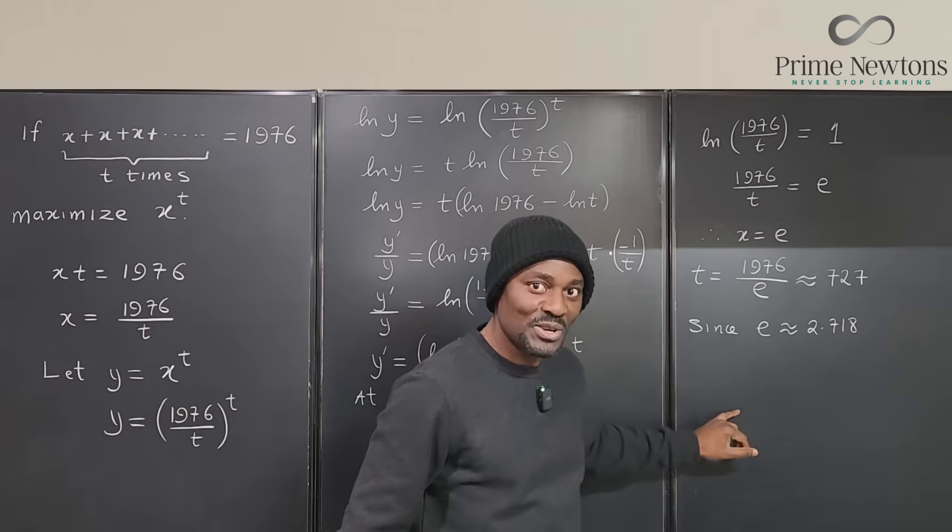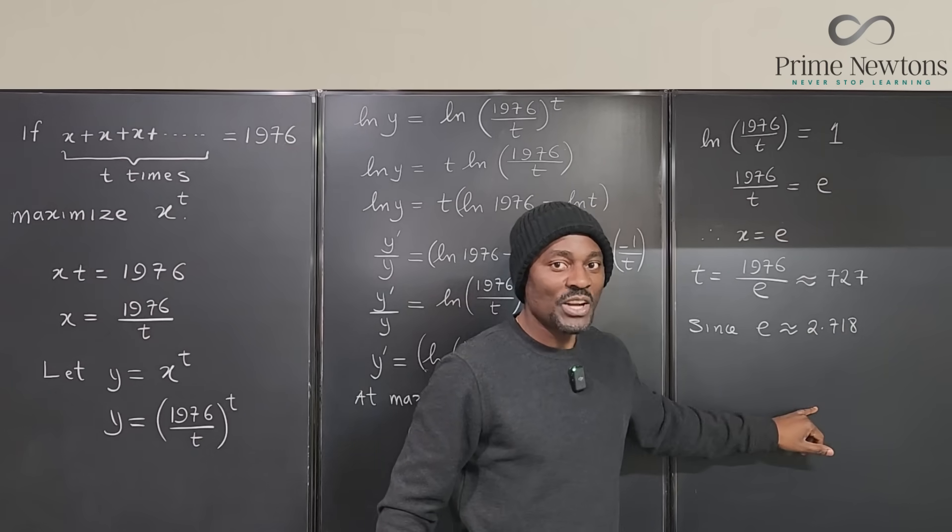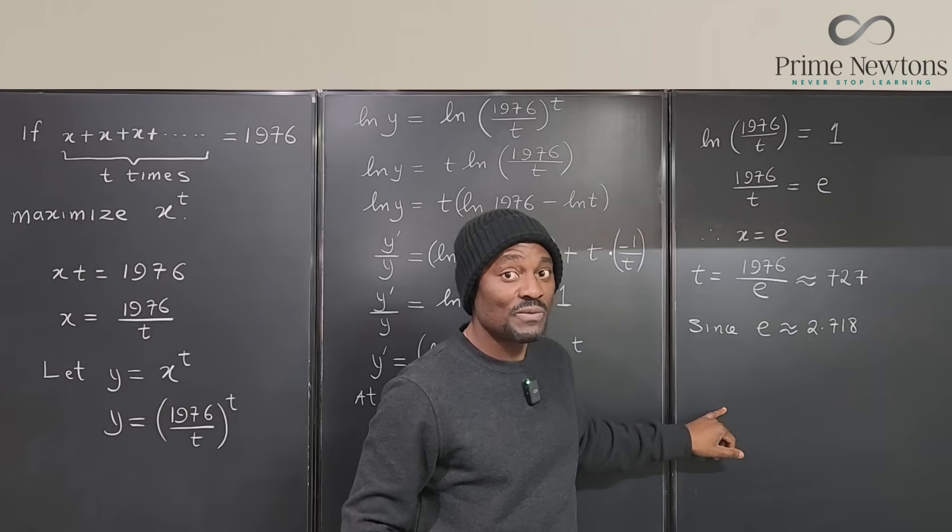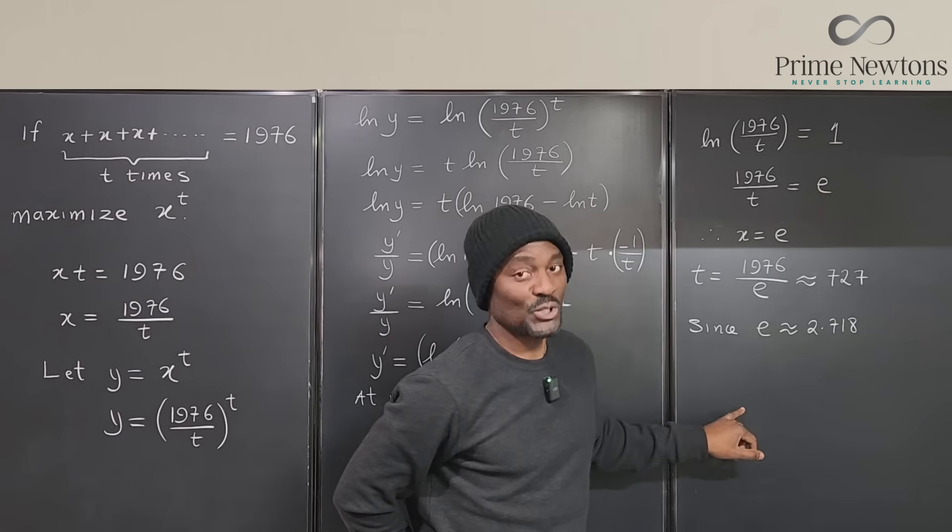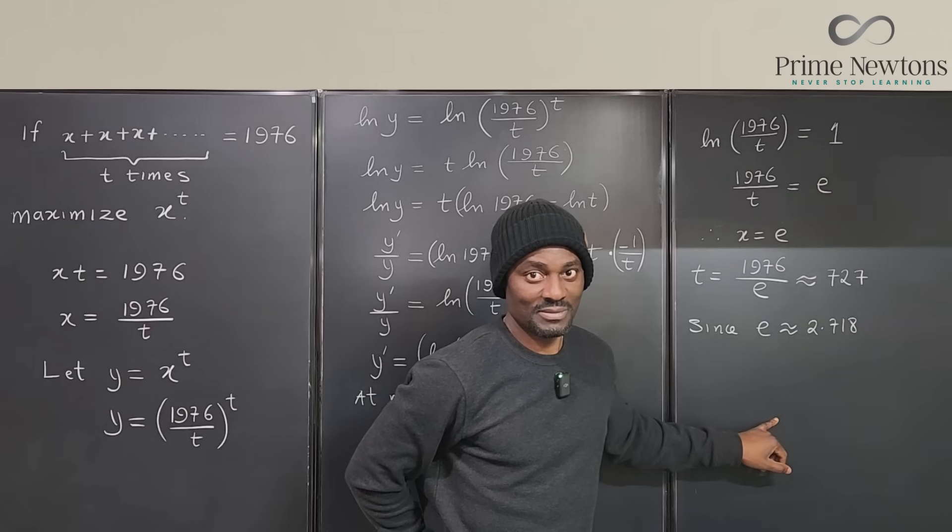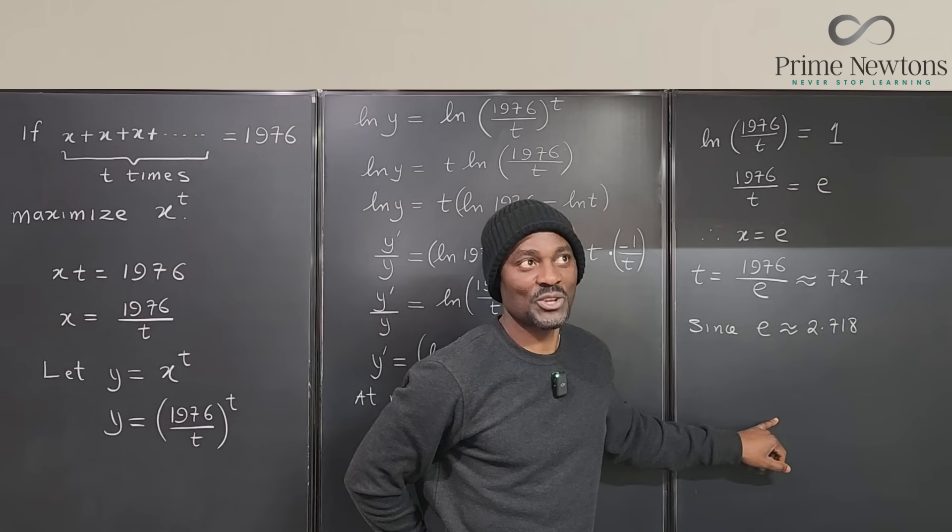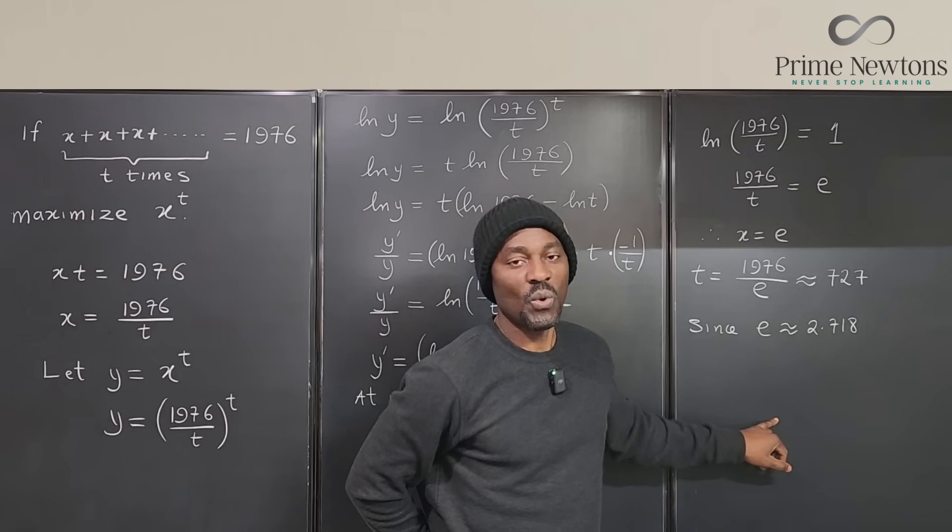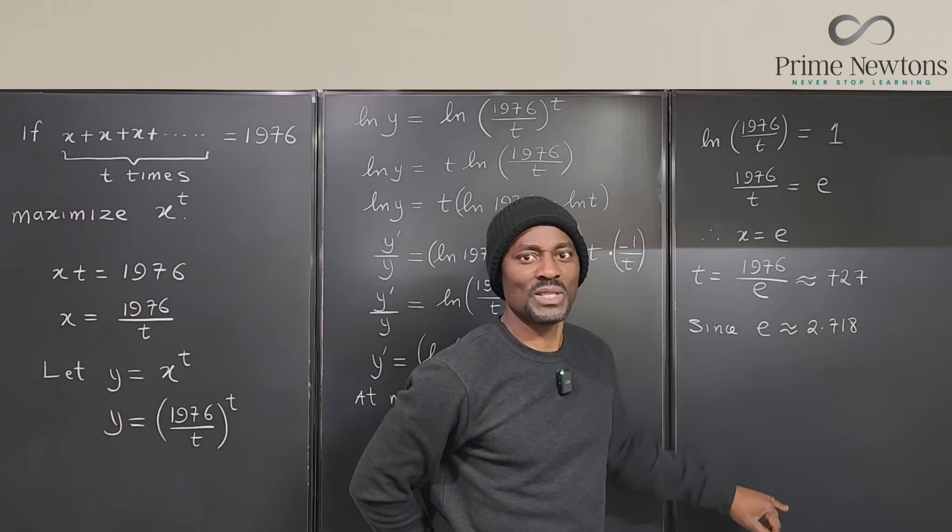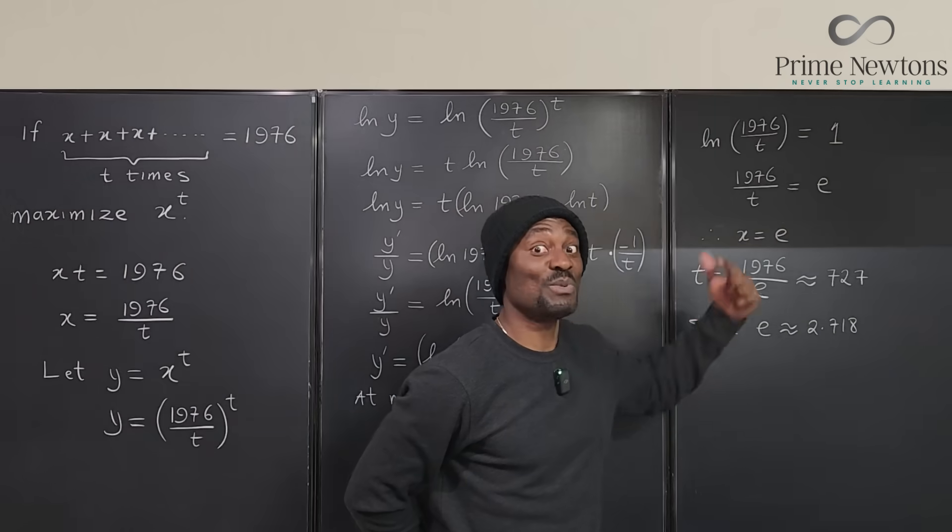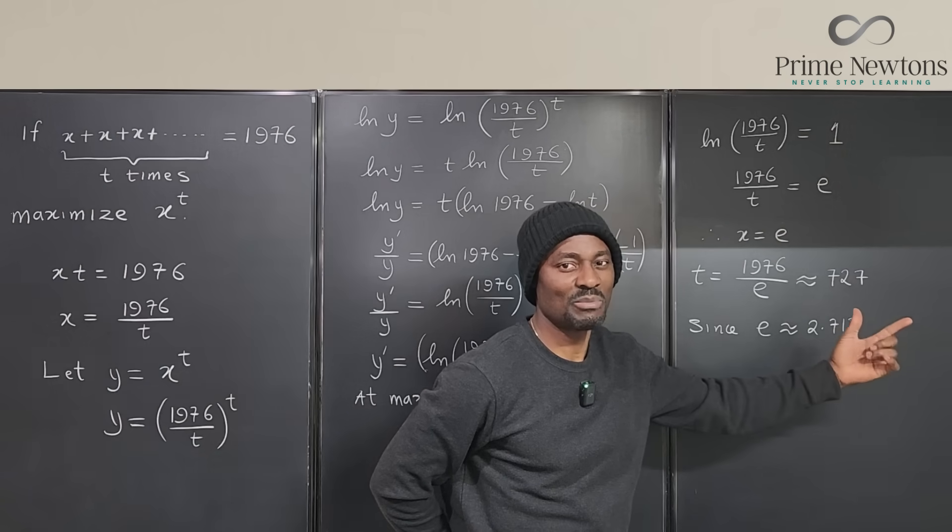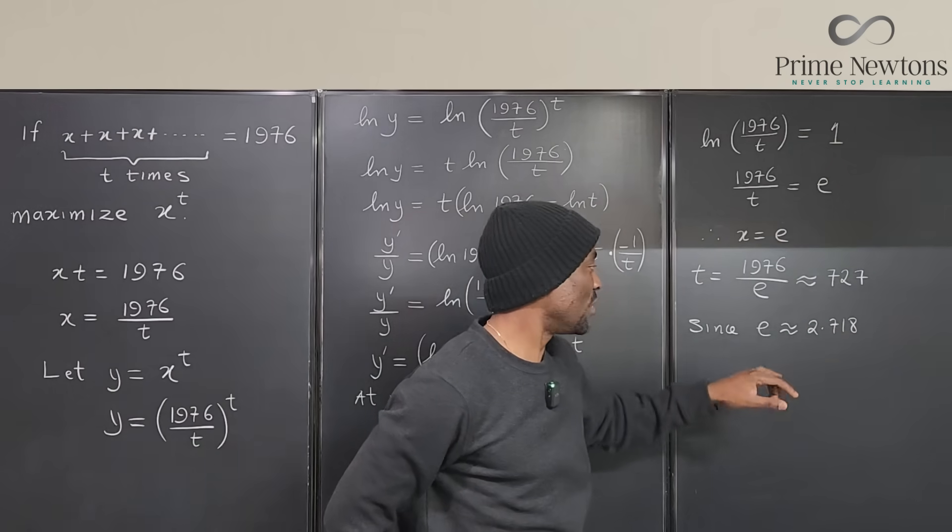And so that's why 3 plus 3 plus 3 plus 1 will not give you the highest number when you do it for 10. What works for you is 3 plus 3 plus 2 plus 2. That's going to be 9 times 4 which is 36, is better than 27. But if you use E it would be even higher, I think it's 37 point something if you use E.